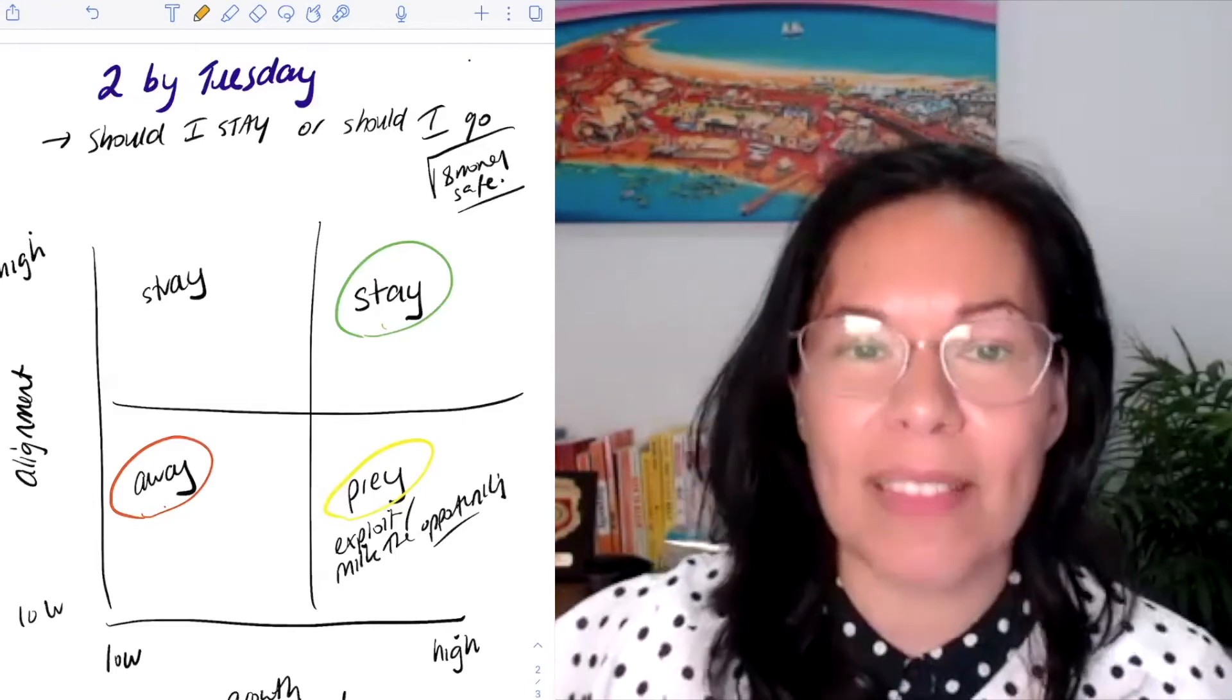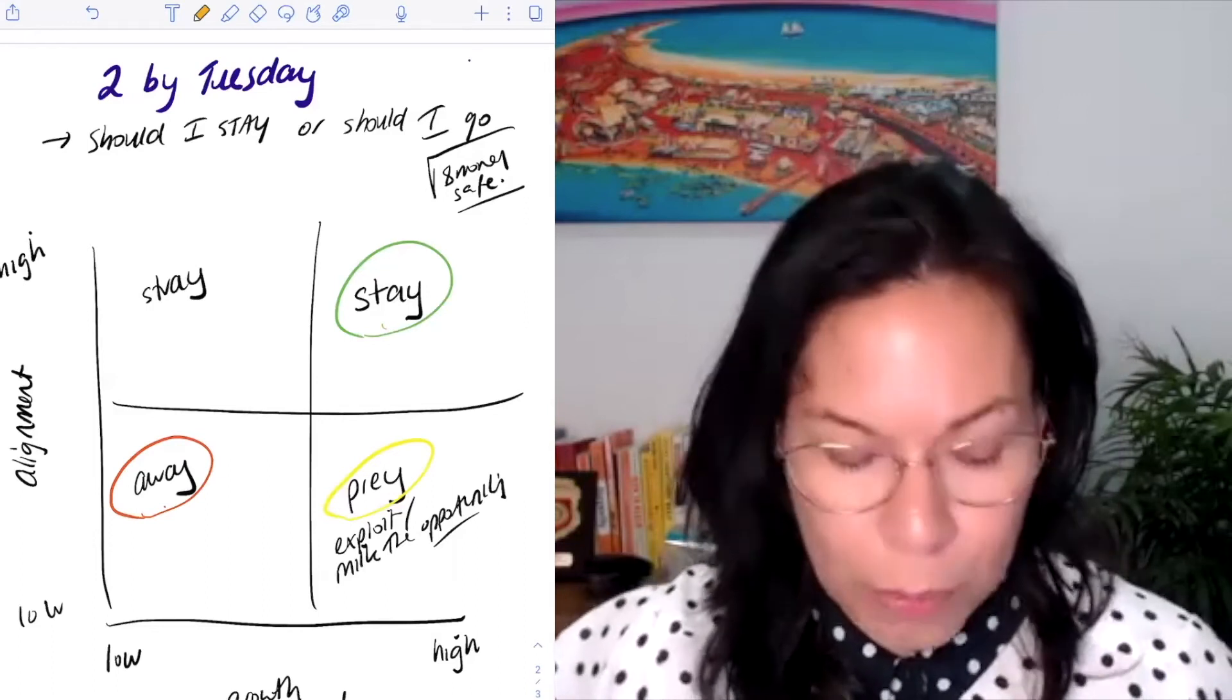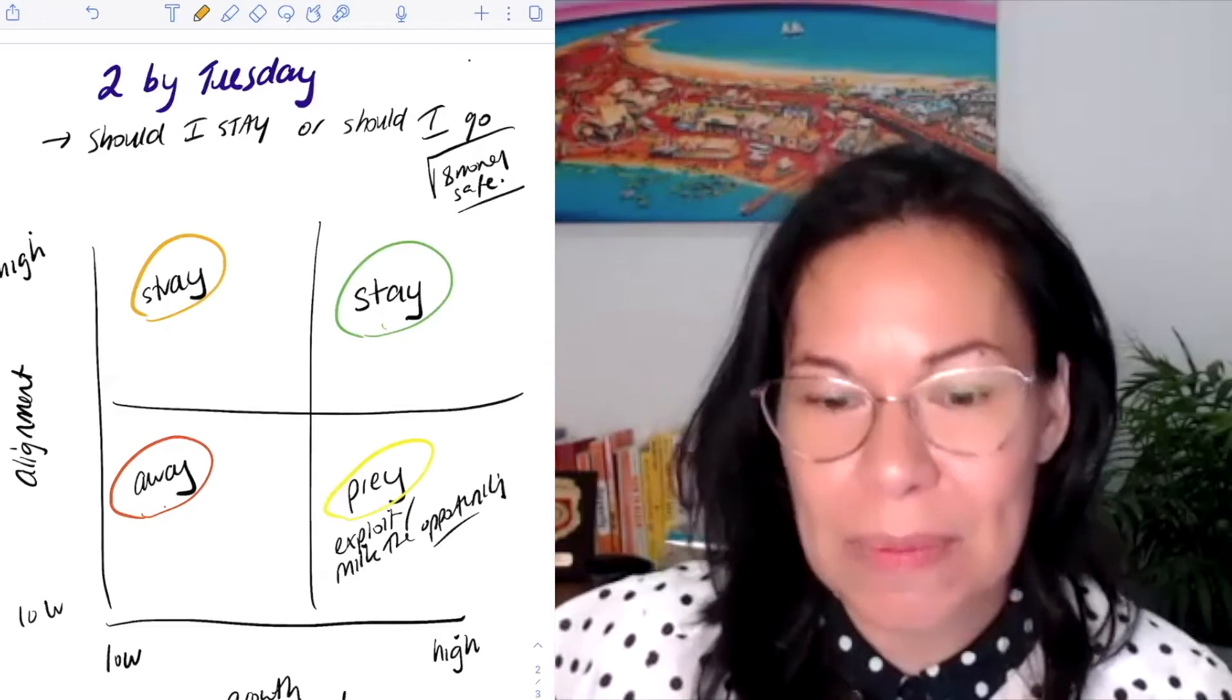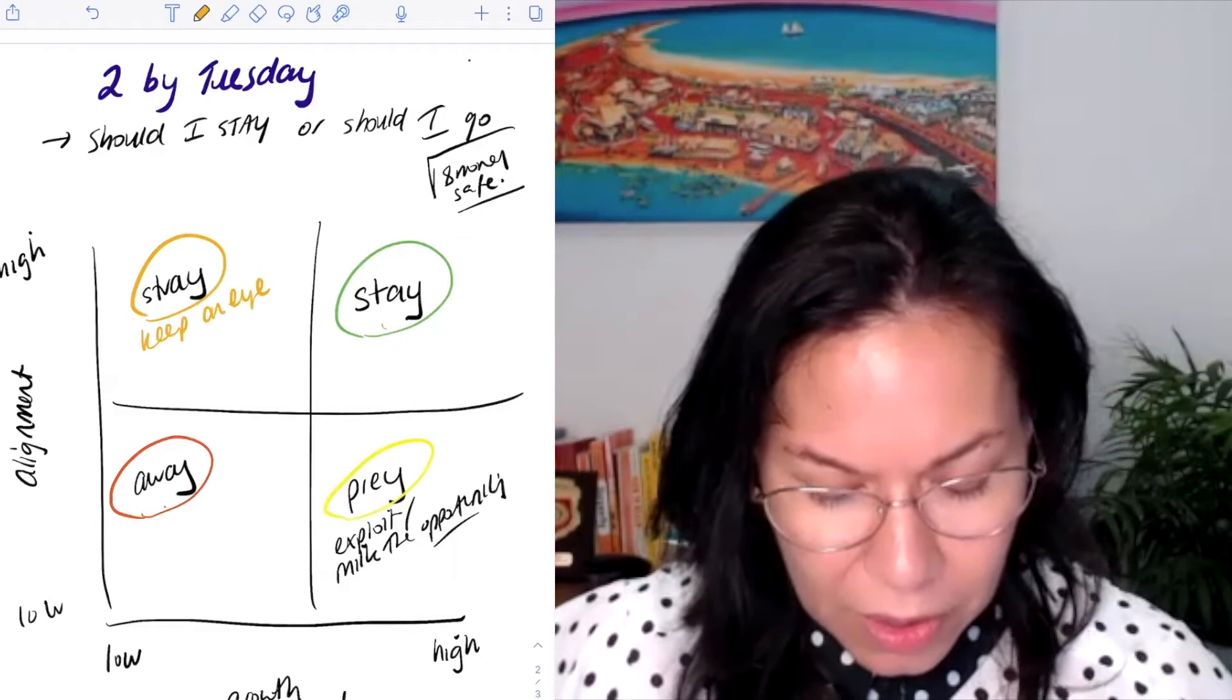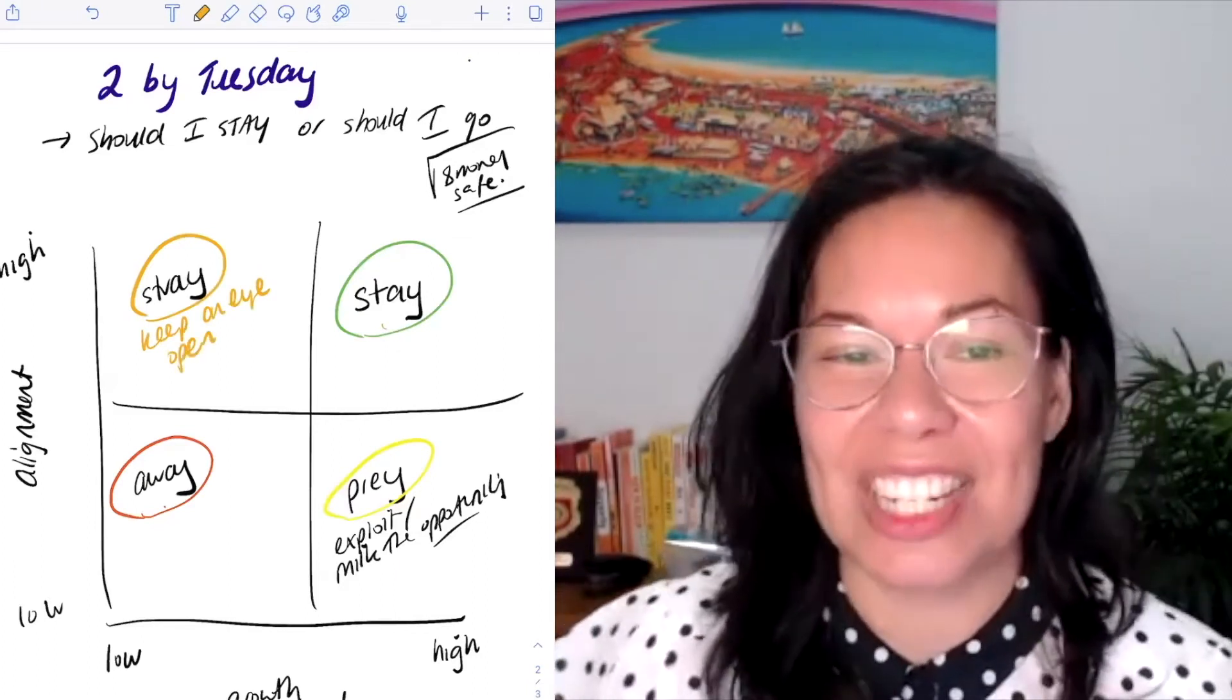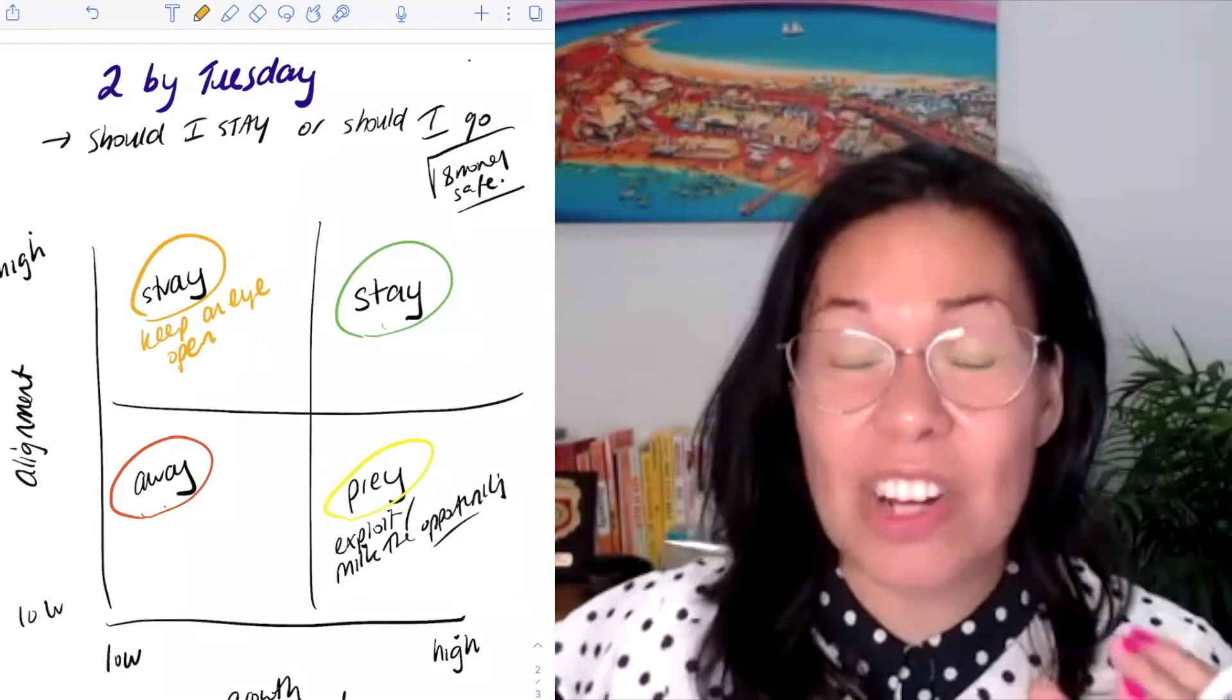And then top left: this is high alignment and low growth potential. I've got here stray. What I really mean by that is keep an eye open. It's great. I think it's wonderful that you have and work in an organization where there is some clear alignment with your values and everything else.